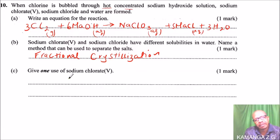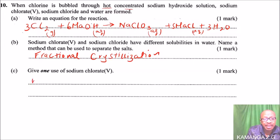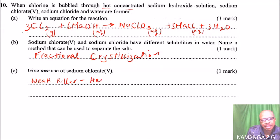Part C: give one use of sodium chlorate. One use is that it is an insect killer — you can call it a weed killer. It can be used as a herbicide, or to manufacture herbicides.